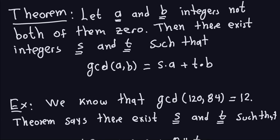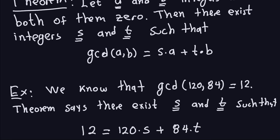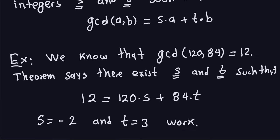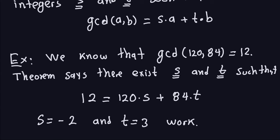Hello and welcome again. Last time we talked about this very important theorem which said that the greatest common divisor between two integers can always be expressed as a multiple of the first integer plus a multiple of the second integer. We also saw that it is possible to find s and t. We computed the greatest common divisor of 120 and 84 and got 12. So what the theorem says is that 12 equals 120s plus 84t, and if you check s equals negative 2 and t equals 3, that will work.